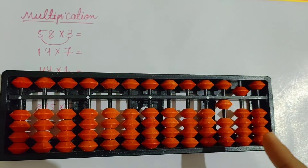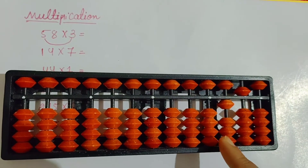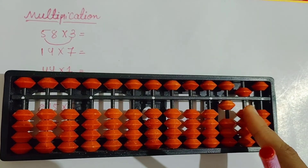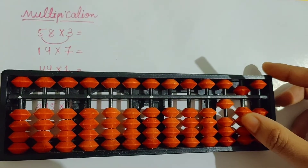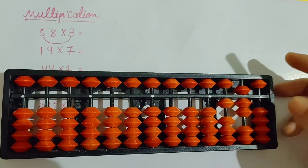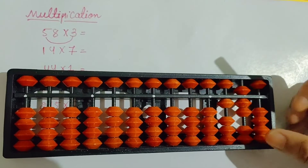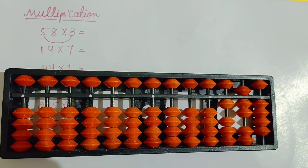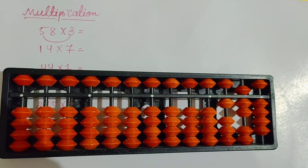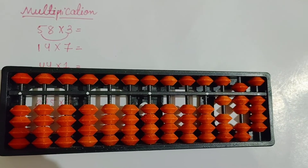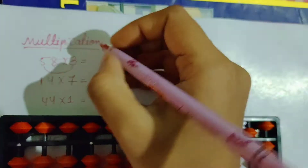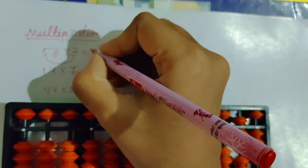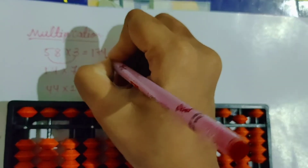So when you will multiply with the second number, the first row you will skip and the second number you will take from the second row. So here you will take 20, and in the next row — the last row — you will take 4. So the answer is 174. Write down the answer here: 174.